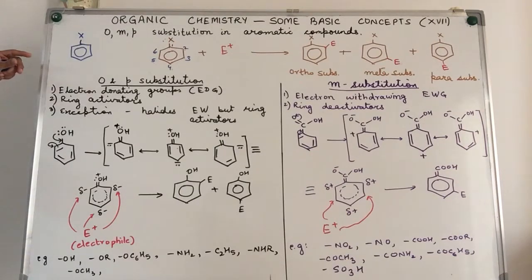If it increases the activity of the benzene ring, that means its ability to react with other compounds, then this particular group is called a ring activator. On the other hand, if this group decreases the activity of the benzene ring, we call it a ring deactivator.